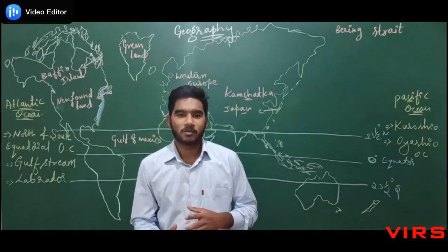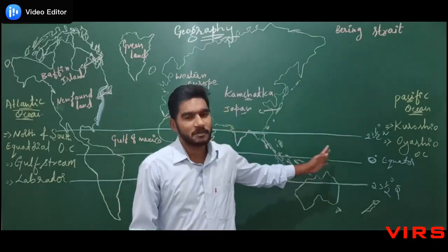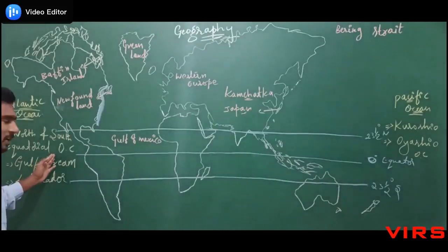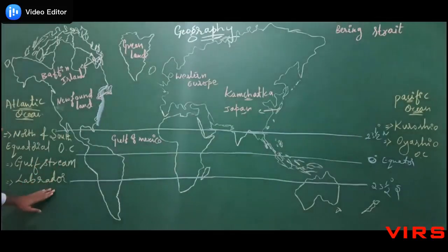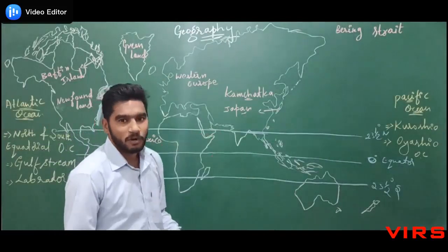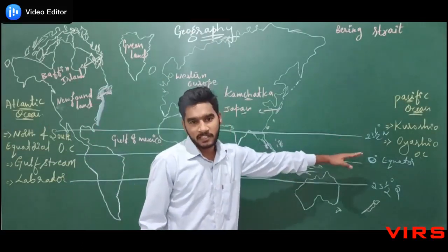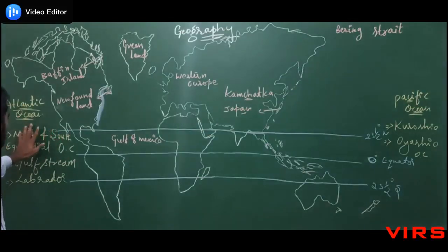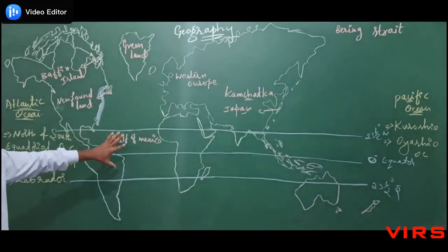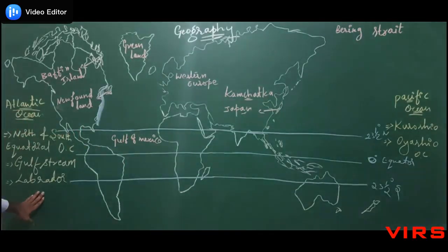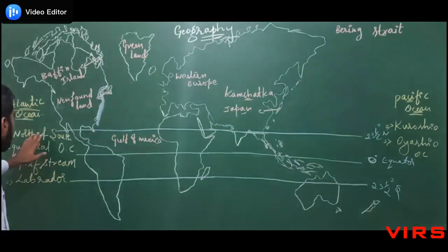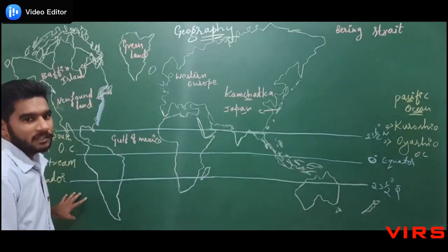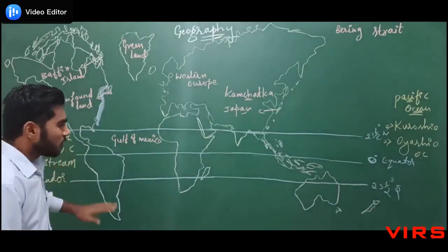Let's see the important ocean currents of the Atlantic Ocean and the Pacific Ocean. In the Atlantic Ocean, we can observe three important ocean currents: the North and South Equatorial Ocean Currents, the Gulf Stream ocean current, and the Labrador ocean current.